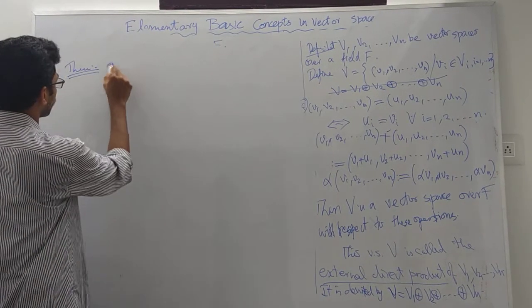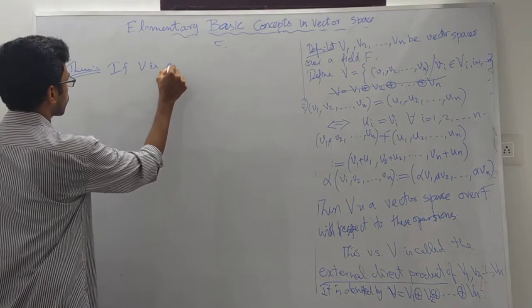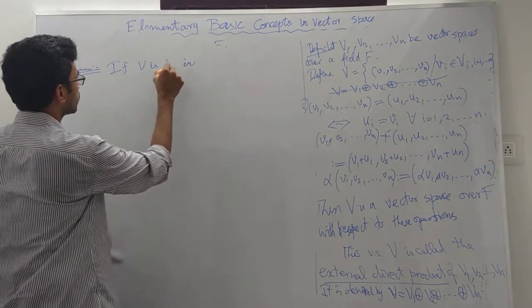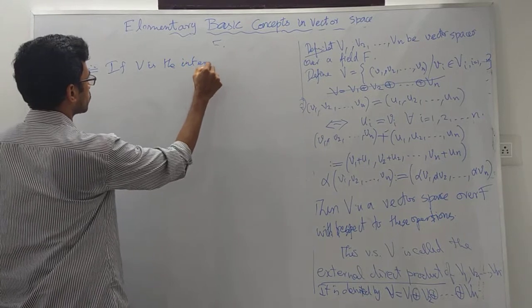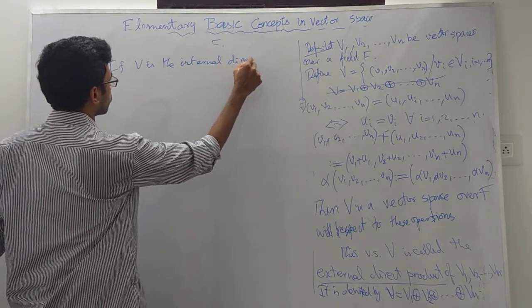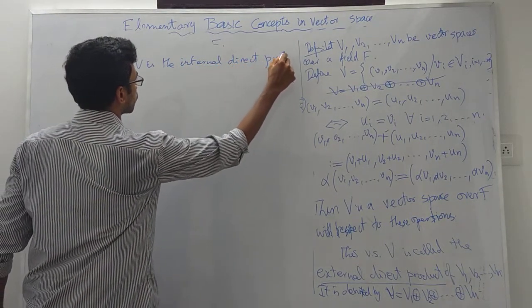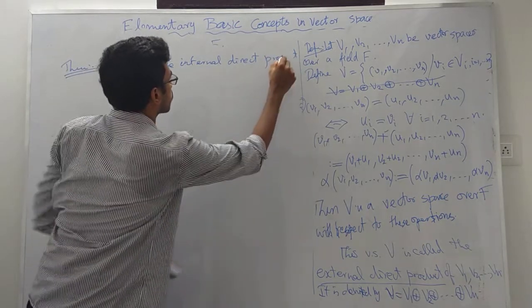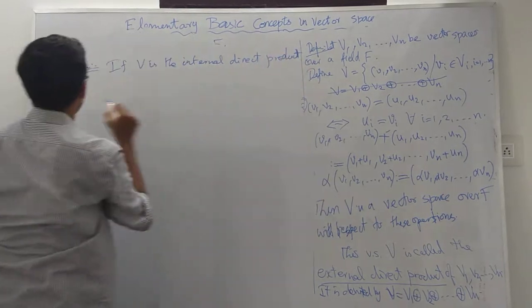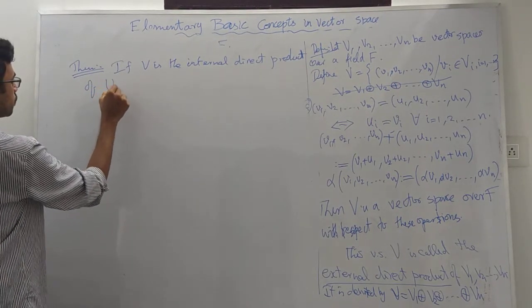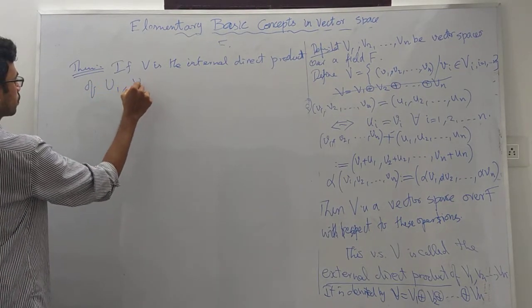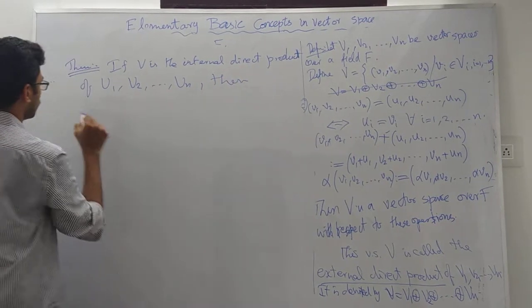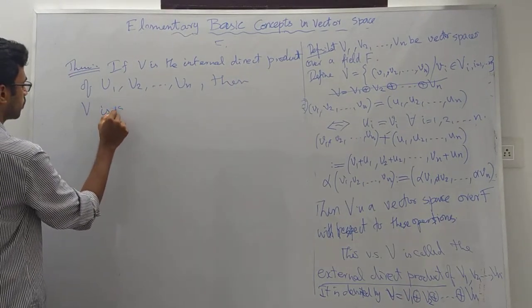If V is the internal direct product of U1, U2, etc., Un, then V is isomorphic to the external direct product of U1, U2, etc., Un.